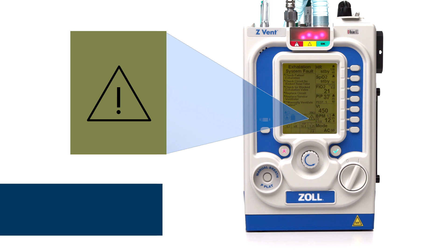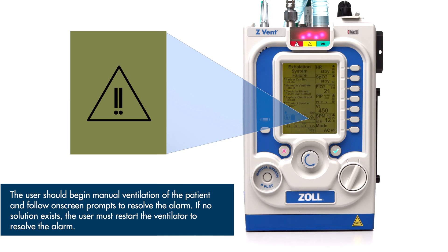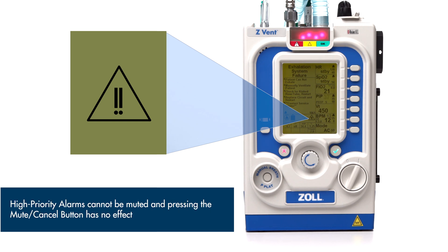If the alarm trigger is still present after 30 seconds, the audible alarm recurs until muted. During a high priority alarm, mechanical ventilation is no longer possible. This alarm requires immediate user intervention. The user should begin manual ventilation of the patient and follow on-screen prompts to resolve the alarm. If no solution exists, the user must restart the ventilator. The LED array will rapidly flash red accompanied by a fast audible tone. High priority alarms cannot be muted, and pressing the Mute-Cancel button has no effect.